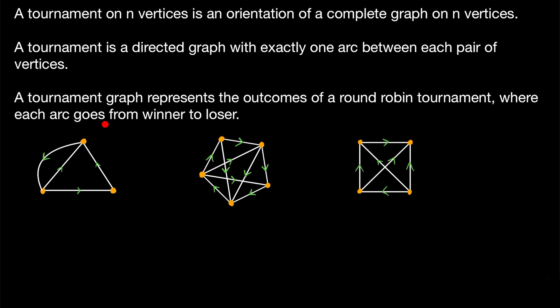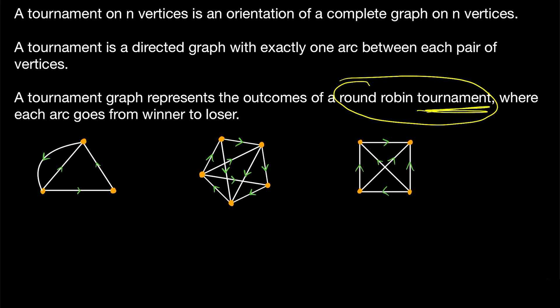A third description, which is more of a description than a definition: a tournament graph represents the outcomes of a round-robin tournament, which is a type of tournament in which each team plays all of the other teams once. In a tournament graph, each arc goes from the winner of the match to the loser. Tournament graphs were not originally studied to model round-robin tournaments, but instead to model dominance in flocks of chickens — though modeling round-robin tournaments with them is a natural way to think about them, and it's where they get their name.